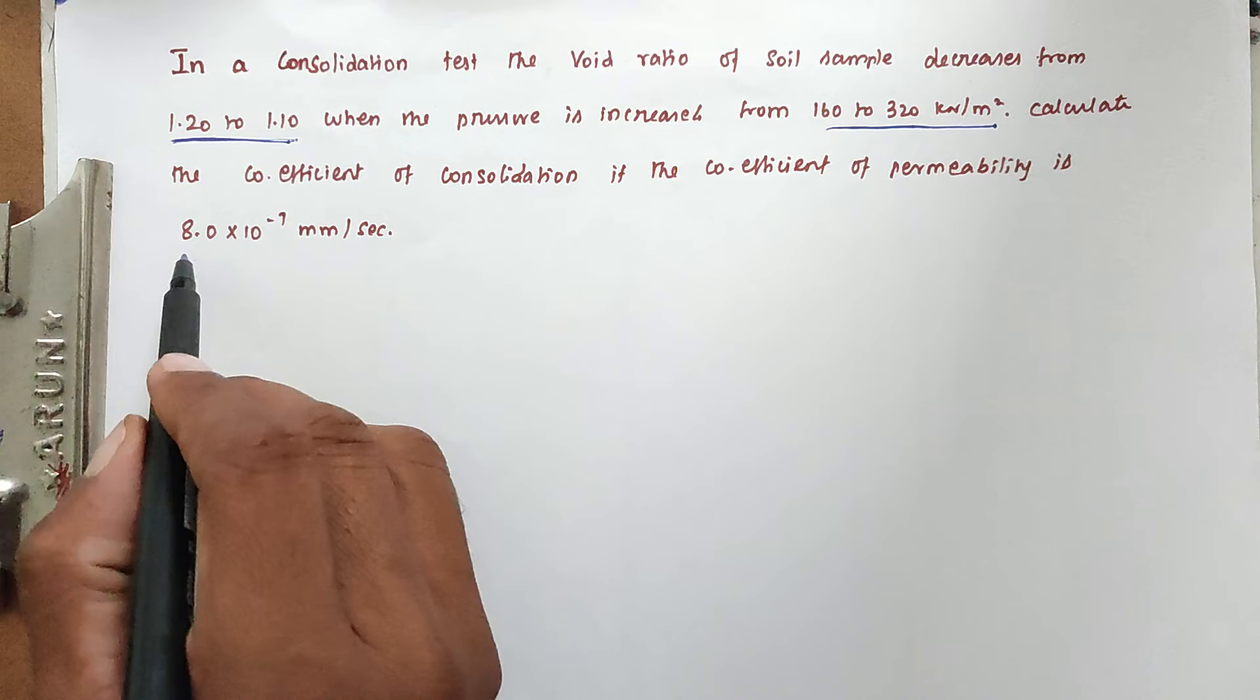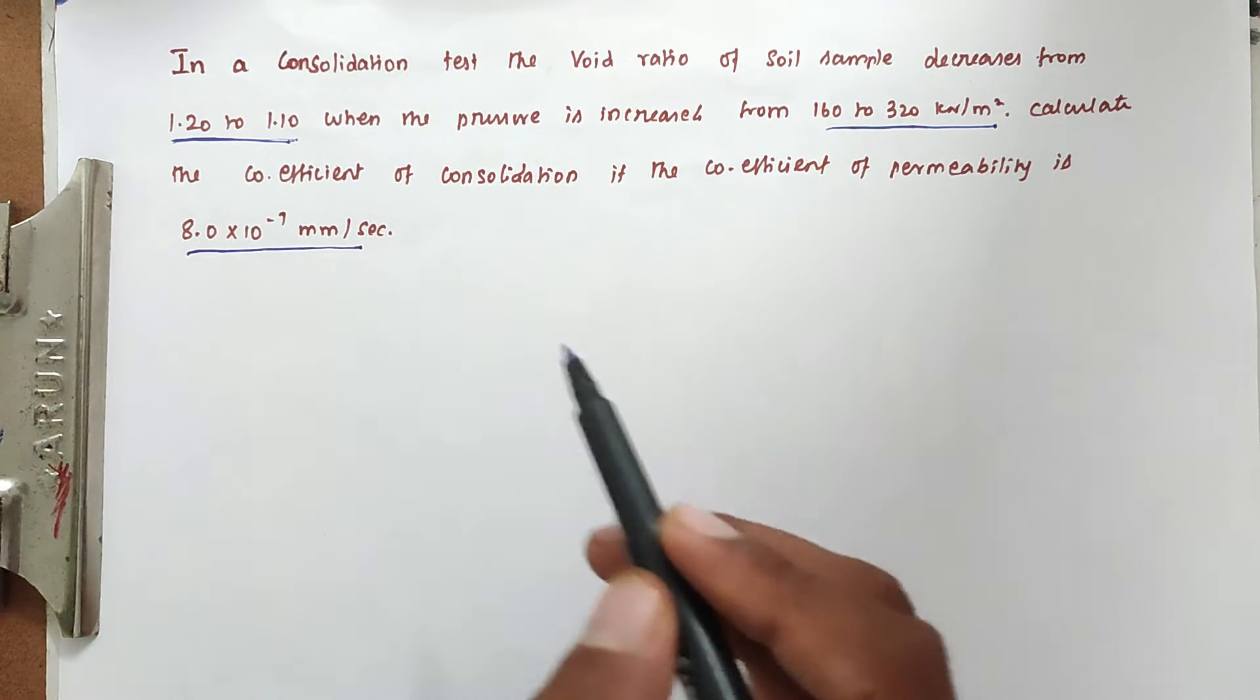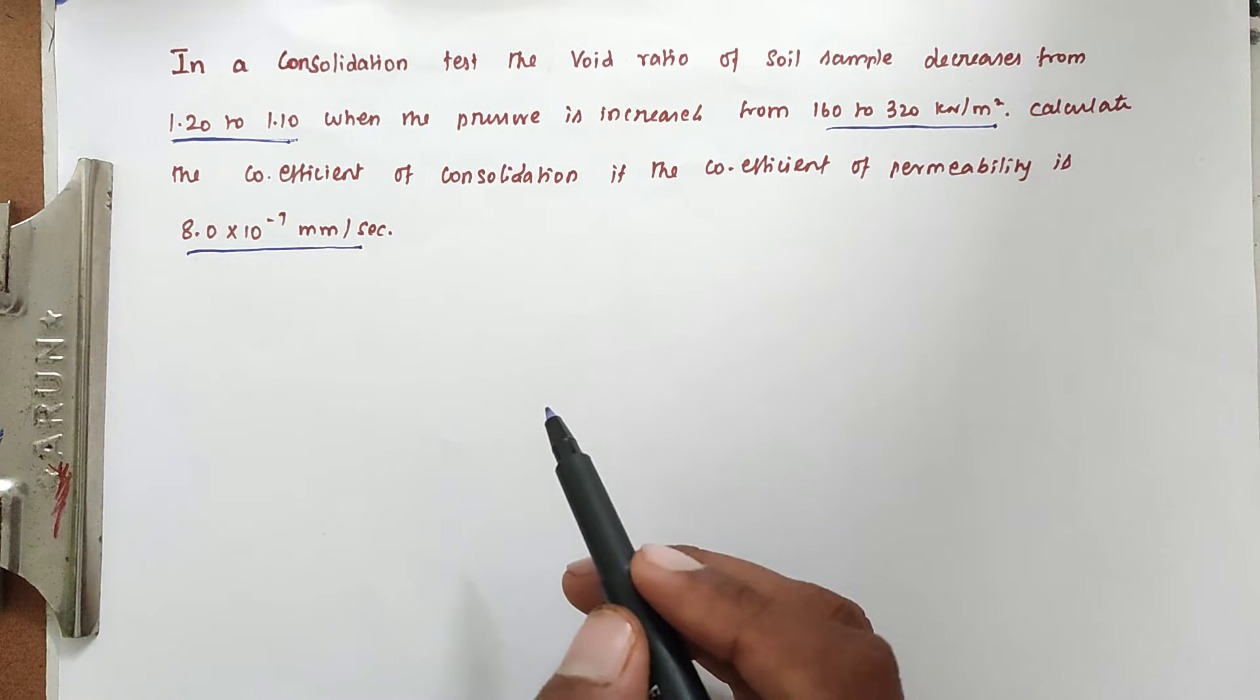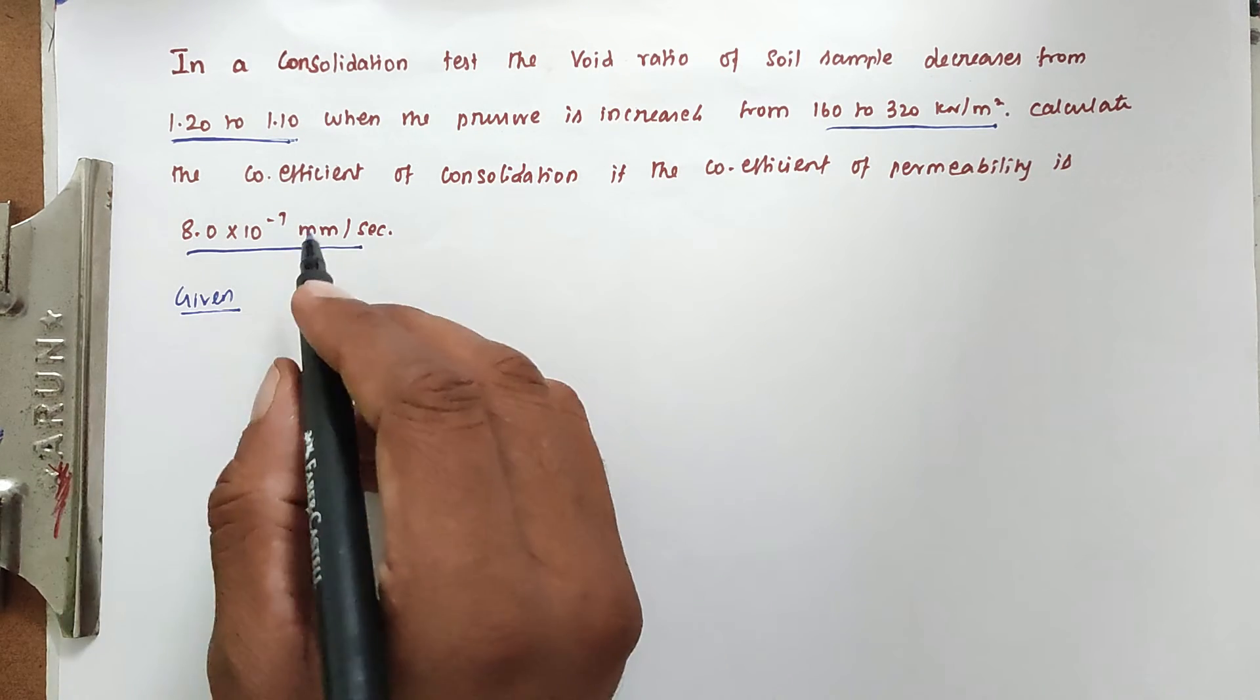This is vice versa because the void ratio decreases as the pressure increases. Then calculate the coefficient of consolidation if the coefficient of permeability is 8.0 × 10^-7 mm per second.